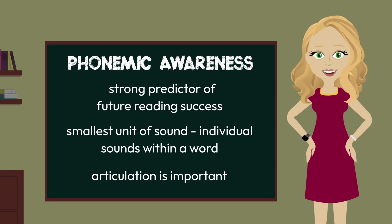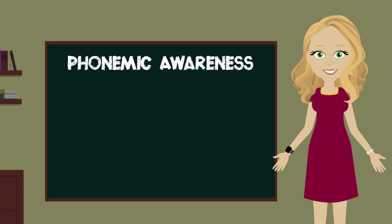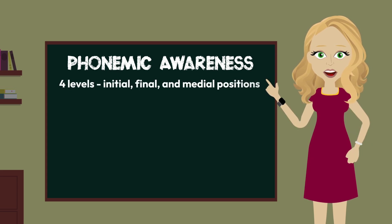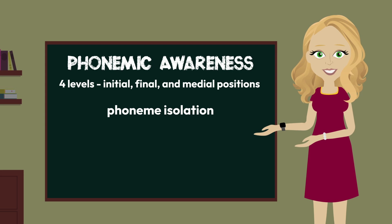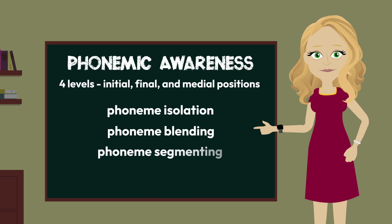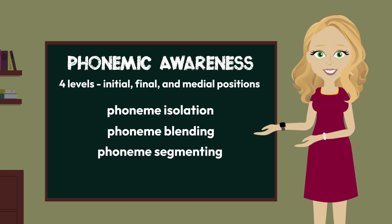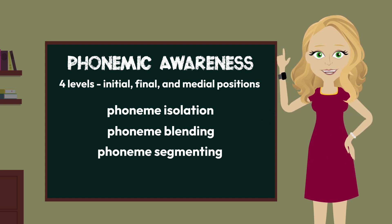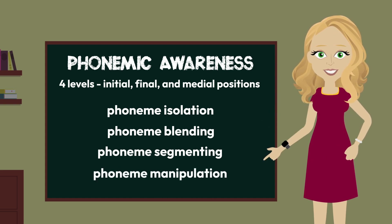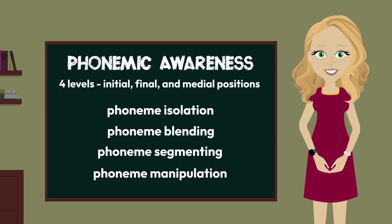Auditory development at the phonemic awareness level also progresses in levels, but all levels are working with the same size units of sound — individual phonemes — and each of the four levels should work with the focus sound skill in the initial, final, and medial positions. Phoneme isolation is the ability to hear a word and each sound within that word. Phoneme blending refers to combining spoken sounds into a word, and phoneme segmenting means to hear the whole word and be able to pull it apart sound by sound. The highest level of complexity in phonological awareness is phoneme manipulation, where you play with words by adding sounds, deleting sounds, and substituting sounds to make new words.